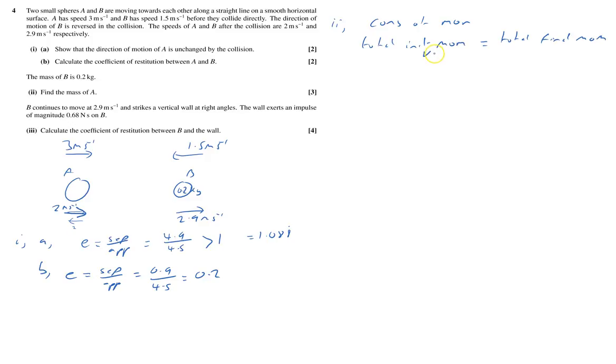So momentum is mass times velocity. So what have we got? Initially we've got M, mass times velocity, M times 3, so that would be 3M. And this goes the opposite direction, so that would be minus 0.2 times by 1.5.